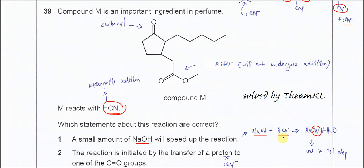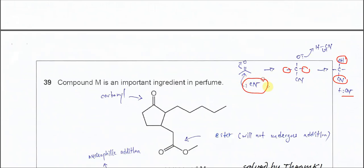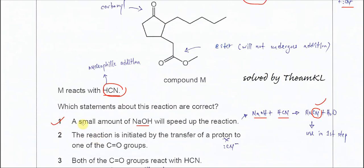Therefore, it's true that when we add sodium hydroxide, it can speed up the reaction because cyanide will form and be used for the first step here. This addition is going to be much faster with the presence of cyanide. The first statement is correct.